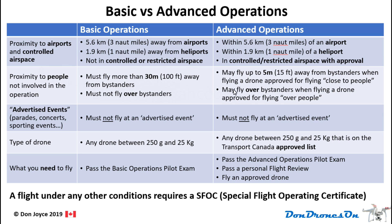If you have your advanced operations certificate, you may fly closer if you have the right kind of drone. If you have a drone approved for flying close to people, you can fly up to five meters away from bystanders. If your drone is approved for flying over people, you can fly right over them. Advertised events are slightly different — defined as any publicly advertised event such as a parade, outdoor music concert, or sporting event. If you have a basic operations certificate, you must not fly at an advertised event. Even with an advanced operations certificate, you may not fly at an advertised event.